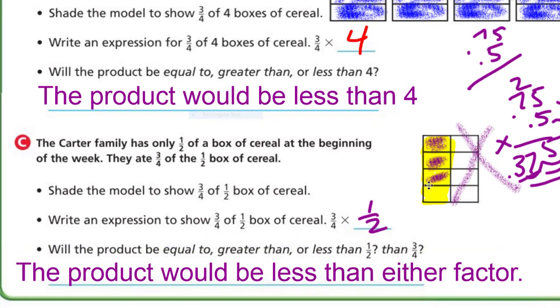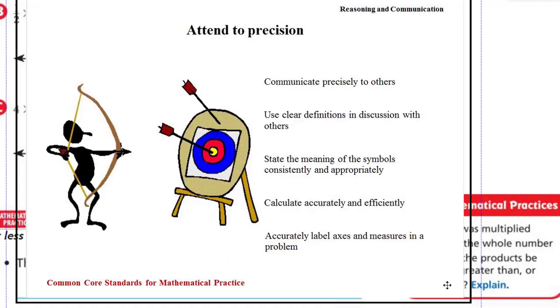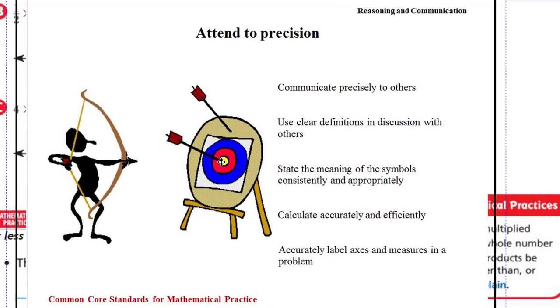Mathematical practice six, where we're attending to precision here. Attending to precision has to do with a lot of things: communicating, explaining to others, we calculate accurately and efficiently. That is one of the mathematical practices, mathematical practice six.